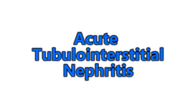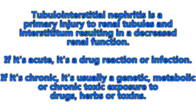Today's topic is an introduction to acute tubulo interstitial nephritis. In summary, it's a primary injury to the renal tubules and interstitium resulting in decreased renal function. It's usually an acute drug reaction or infection. The chronic form involves genetic, metabolic, or obstructive chronic exposure to drugs, herbs, or toxins. It's diagnosed by HMP, urinalysis, and biopsy, and treatment is based on the etiology.